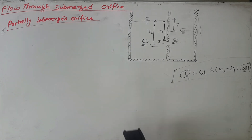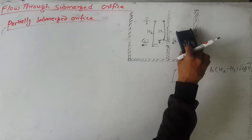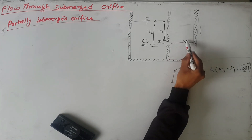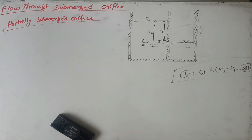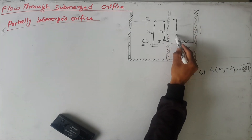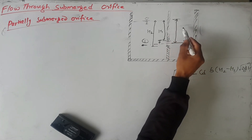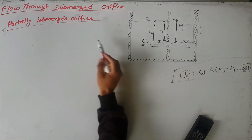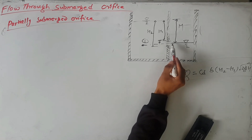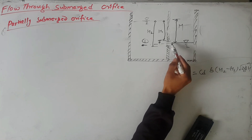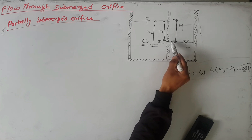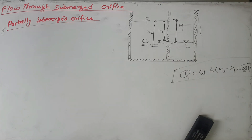Now we move to the partially submerged orifice. Some changes are made to the figure: the free surface is up to a certain level, and there is a difference in the water level between the two surfaces. A partially submerged orifice is one in which the orifice is only partially submerged — one part is surrounded by air (the upper free portion) and the lower part is submerged. We need to find the total discharge through this partially submerged orifice.